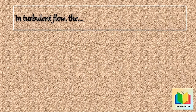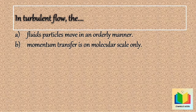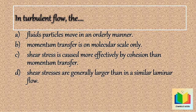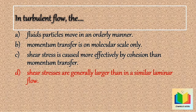Next question: In turbulent flow — Option A: the fluid particles move in an orderly manner. Option B: the momentum transfer is on molecular scale only. Option C: the shear stress is caused more effectively by cohesion than momentum transfer. Option D: the shear stresses are generally larger than in a similar laminar flow. Your time starts now... Stop. The answer is Option D: the shear stresses are generally larger than in a similar laminar flow.